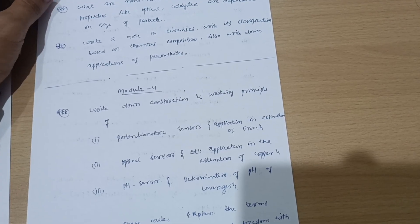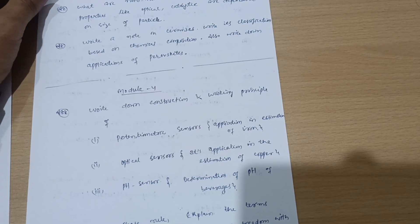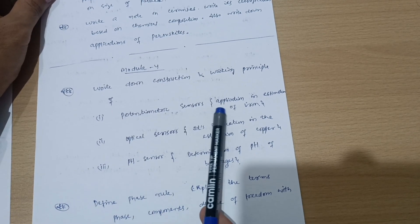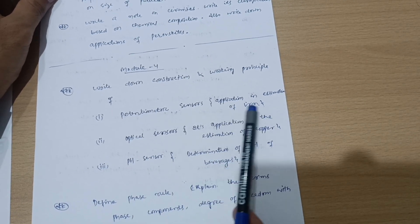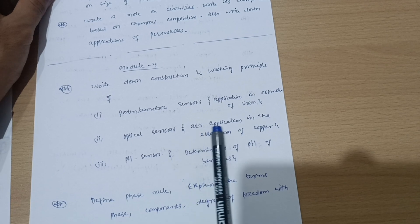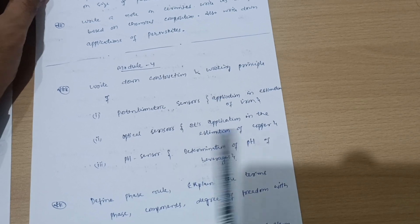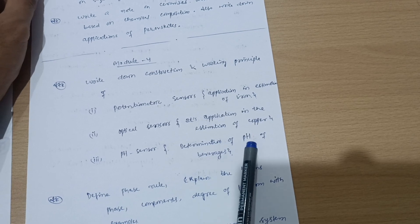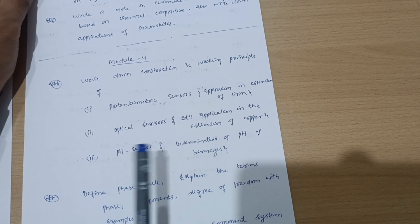As I mentioned in the previous video, chemistry is a diagrammatic subject, so you should focus on diagrams much more than the theoretical part. So potentiometric sensors and its application in estimation of iron and optical sensors, its application in estimation of copper, and pH sensor and its determination of pH of beverages.